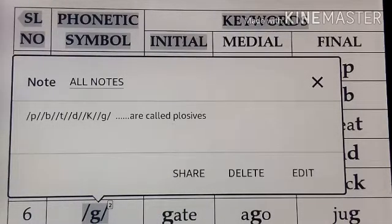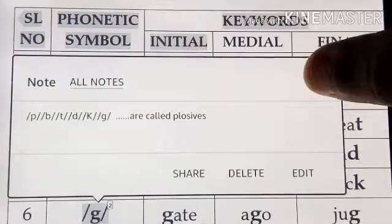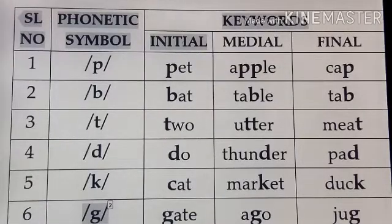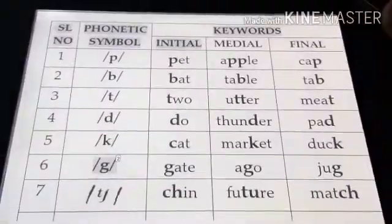These six sounds are called plosives. Plosive consonants are produced by blocking the air in the mouth and then making a sudden release of air by the organs of speech in our mouth. That is why these six sounds are called plosives. Next we move on to the seventh one — this is /ch/.